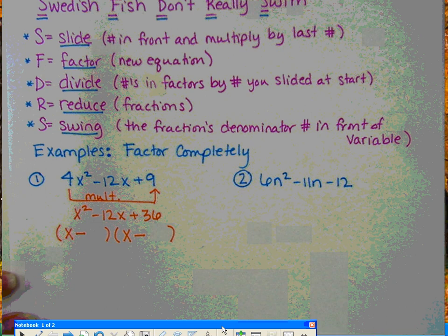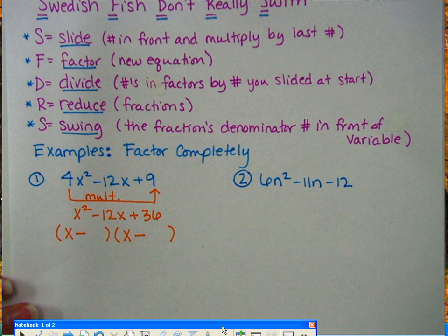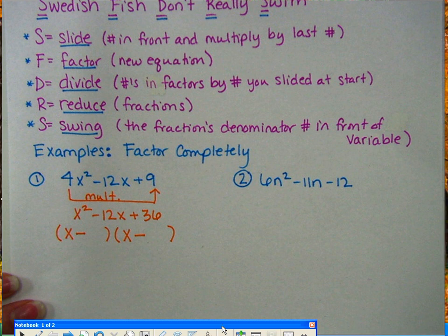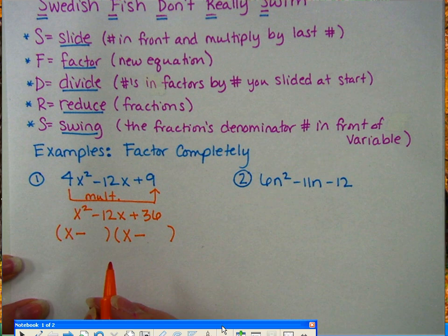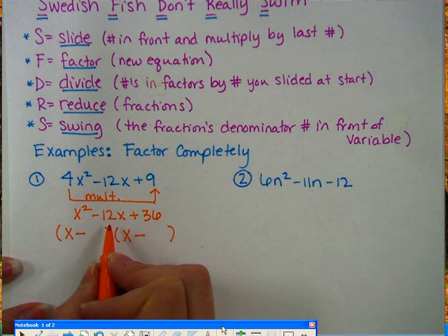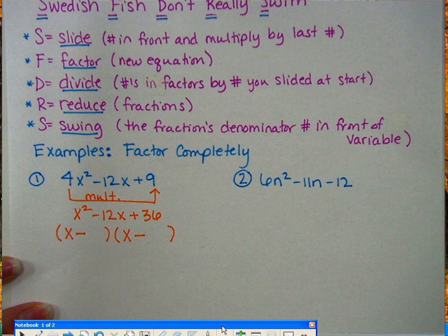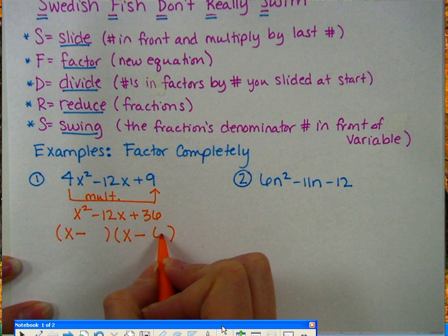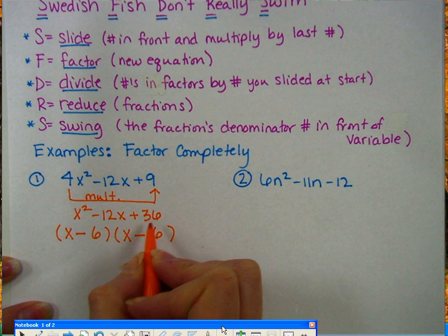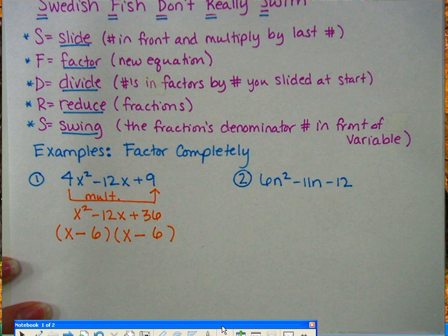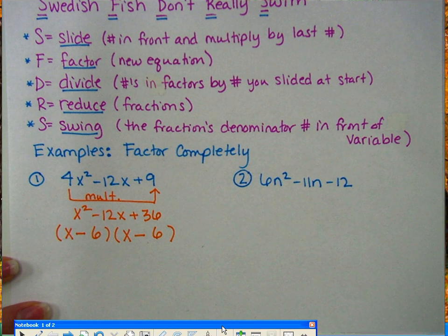So in this case, now we have to say, what are factors of 36 that add up to negative 12? Well, in this case, I know factors of 36 that add up to negative 12 are going to be 6 and 6. So negative 6 times negative 6 gives you positive 36. And negative 6 plus negative 6 gives you negative 12.